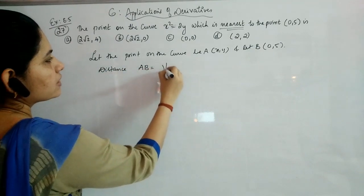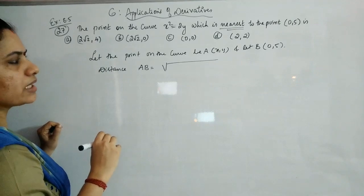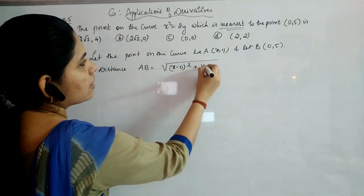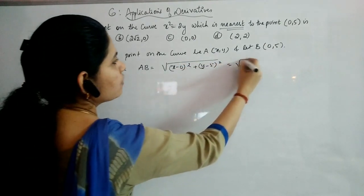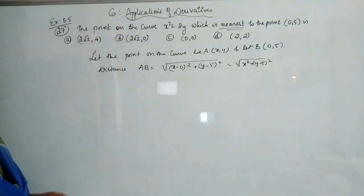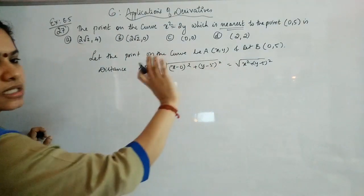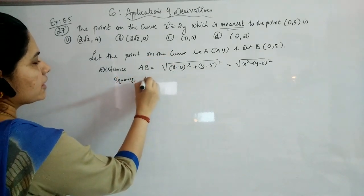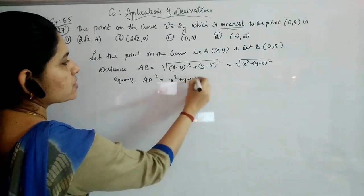Using the distance formula, root of (x₂ - x₁)² + (y₂ - y₁)², we get: distance AB = root of (x - 0)² + (y - 5)² = root of x² + (y - 5)². Squaring both sides to remove the root, AB² = x² + (y - 5)².